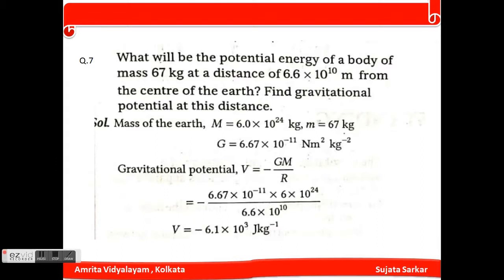What will be the potential energy of a body of mass 67 kg at a distance of 6.6 × 10⁶ meters from the center of the earth? The value of mass M of earth and G is already given. The gravitational potential V equals -GM/R, which is equivalent to -6.1 × 10³ Joules per kg after putting the values.